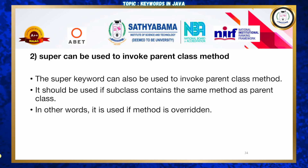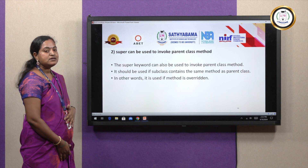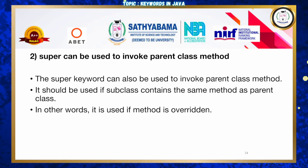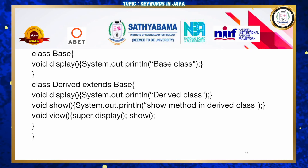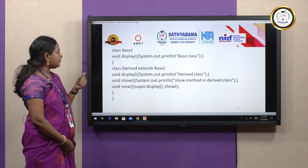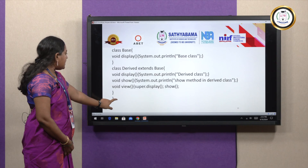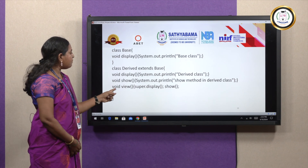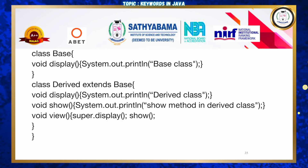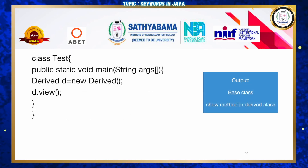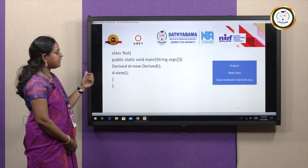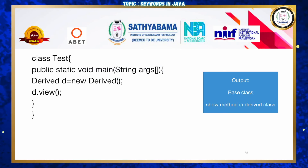Second — super to invoke the parent class method. It is used when the subclass contains the same method as the parent class — that is, method overriding. Class Base has a void display method. Class Derived also has a display method, plus a view method and show method. In the view method, 'super.display()' calls the base class display. In the test class, calling 'd.view()' accesses both the base class method and the derived class method.